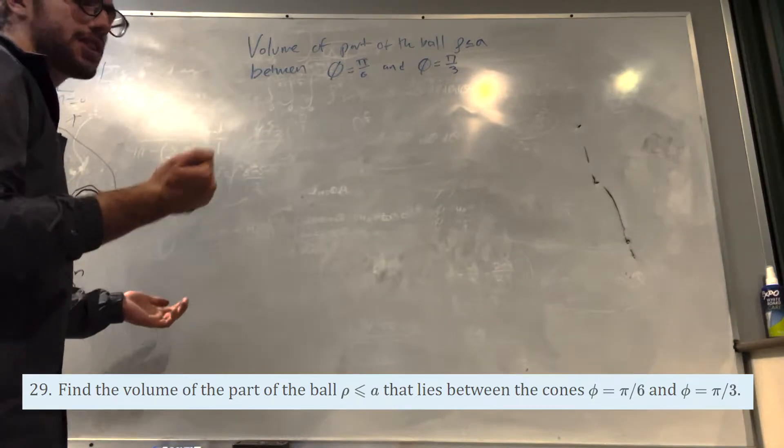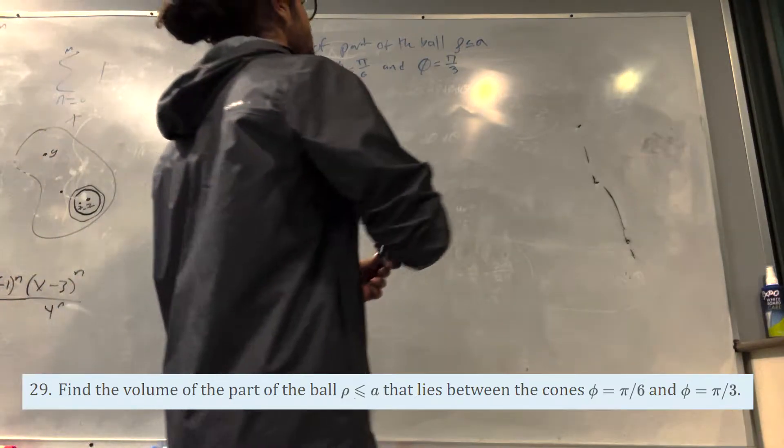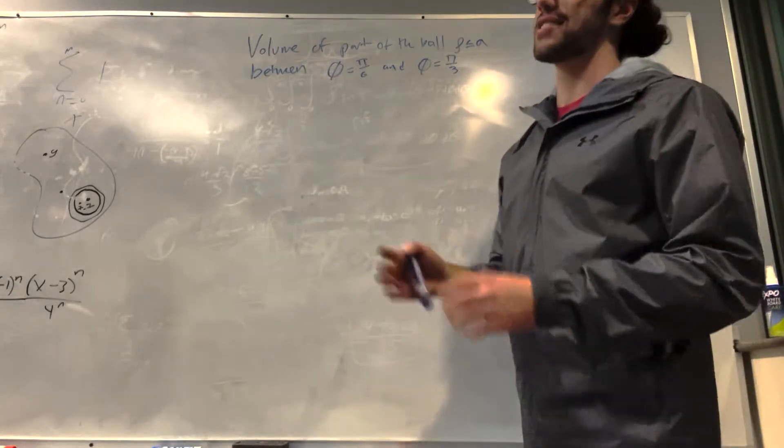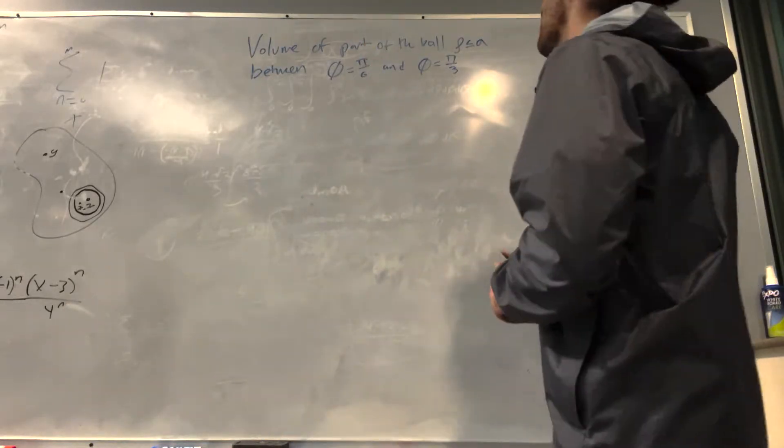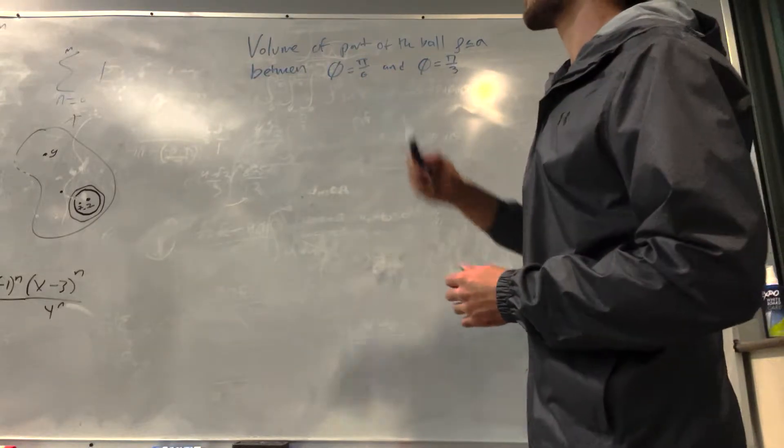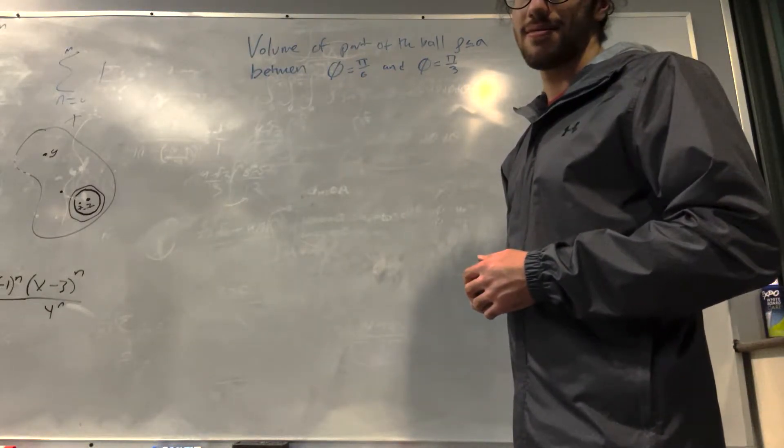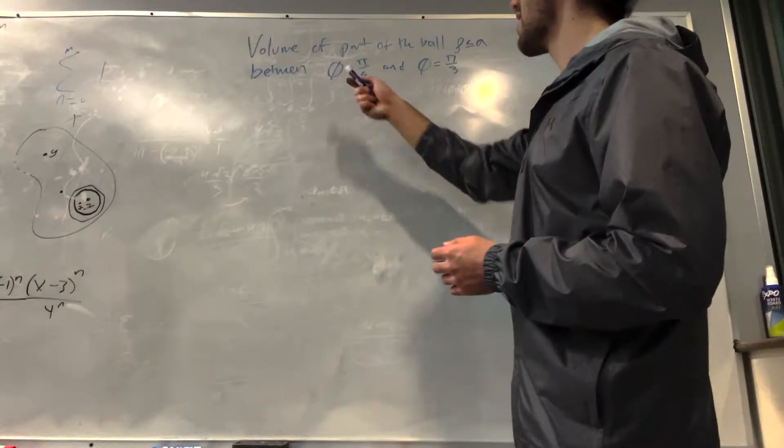Anyway, so how do we solve this? Well, this is just a ball of radius a. Radius for a ball is called rho. And theta, er, not theta, this is rho. I'm just kidding. This is phi. It's been a long day.